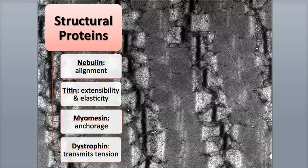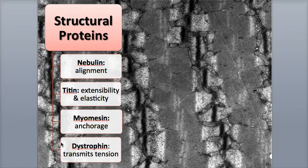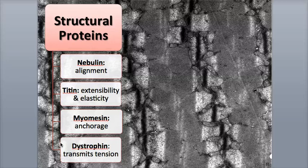This is also the protein that is affected in muscular dystrophy, where the gene that codes for the production of dystrophin is mutated. This results in little or no dystrophin, resulting in tearing and damage of the sarcolemma during muscle contraction, which ultimately destroys the muscle fibers.